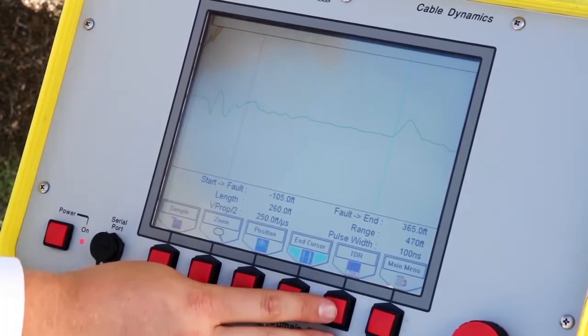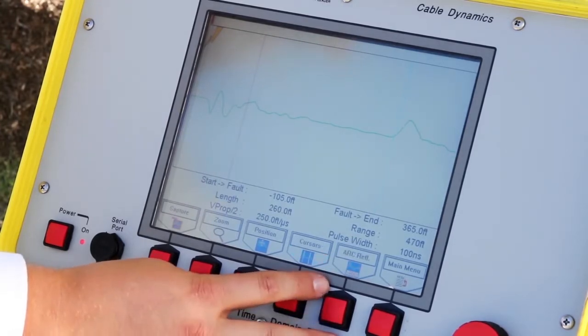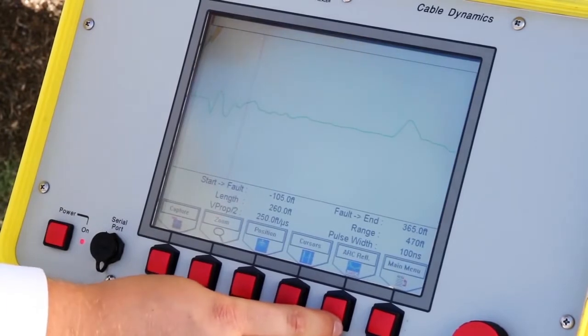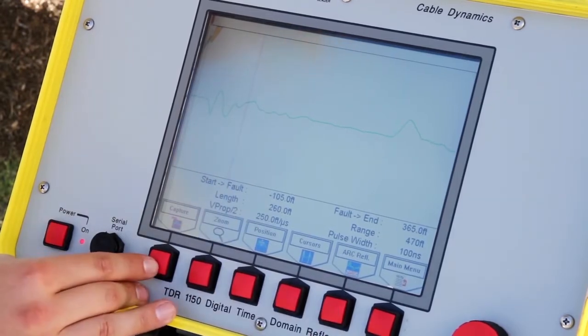Next we'll press TDR, which will give us a new set of options for the cable fault locating test sequence. Next is arc reflection. Arc reflection will send a high voltage impulse through the cable, and it will show a red line on the screen and it will signify where the short is or the cable fault on the particular cable path. So once we are in arc reflection, we'll press capture.